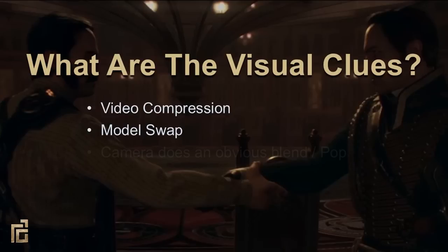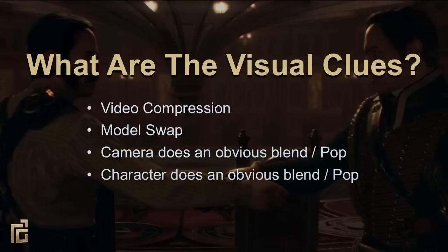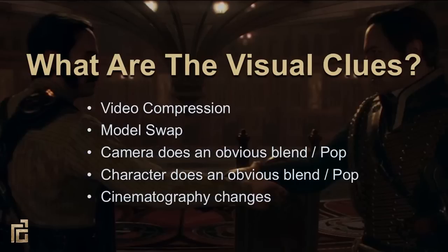So another indicator is the camera. Obvious blends of the camera swinging into position or bad camera transitions also become recognizable indicators that the game has switched modes. And like cameras, obvious blends on the character also give away the illusion. And the last major difference is in the way that cinematics and gameplay are shot — including lens choices, framing, and camera movement.